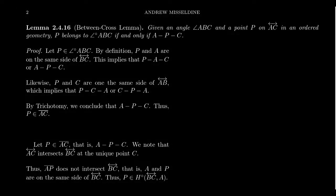In this video, we're going to state and prove the Betweenness Lemma of order geometry. It has to do with angles, and particularly interiors of angles. So imagine we have an angle — the angle ABC — which means that we have three non-collinear points.